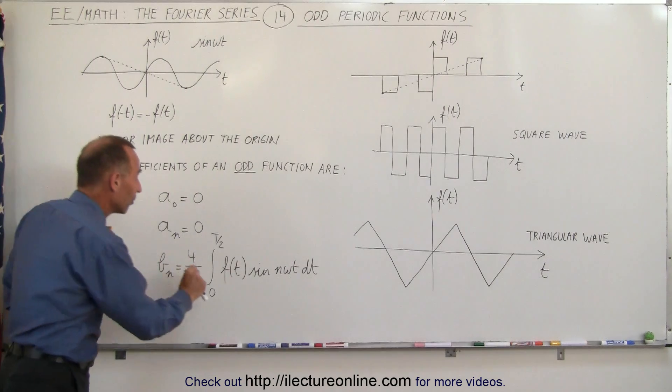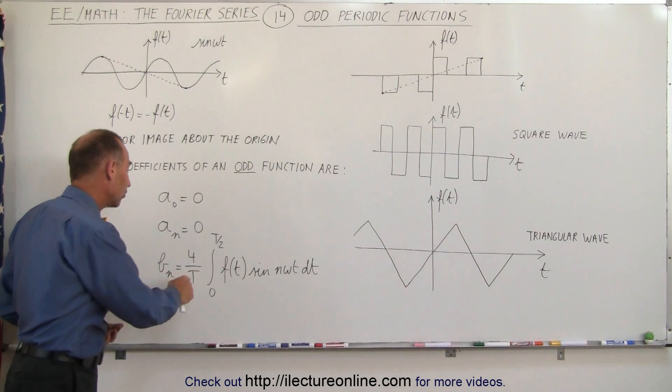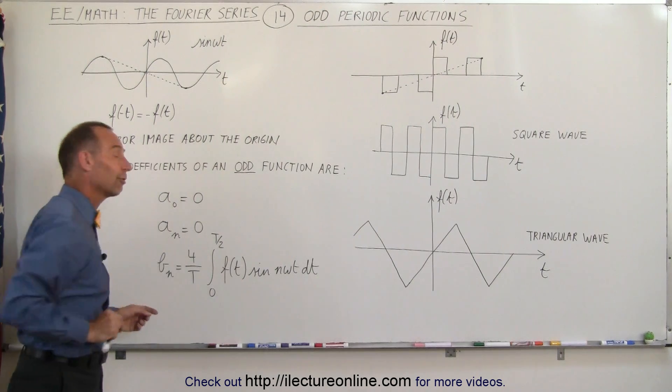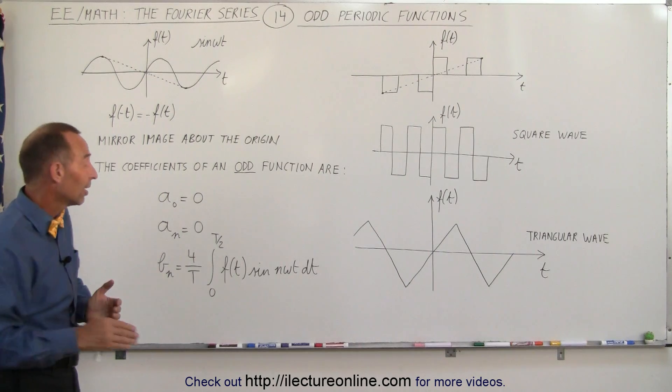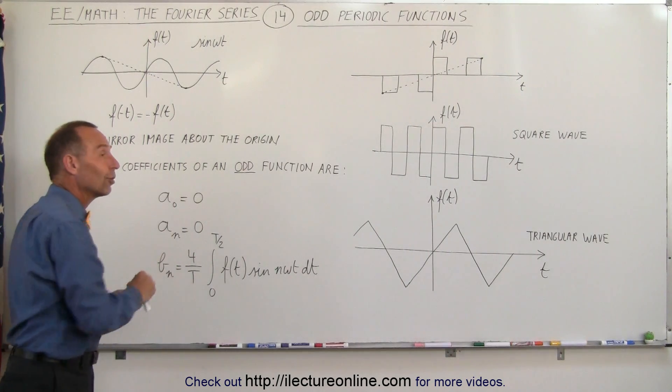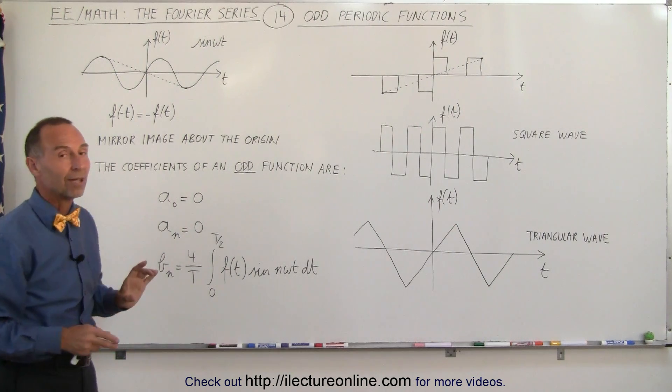And in that case you only have to integrate from zero to half the period instead of from zero to the full period, and the amplitude is therefore double to four over T instead of two over T. But at least now that you know that you don't need to bother with trying to find those because they'll end up being zeros, and you can save yourself a lot of time.